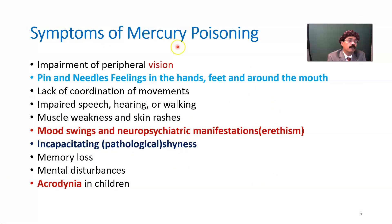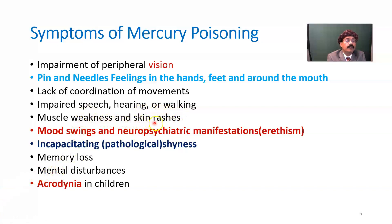The symptoms of mercury poisoning include impairment of peripheral vision, peripheral neuropathy, pain and needle-like feelings in the hands, feet, and around the mouth, lack of coordination of movement, impaired speech, hearing or walking, muscle weakness, and skin rashes. There are also mood swings and neuropsychiatric manifestations — we call it erethism — including incapacitating or pathological shyness, particularly with mercury exposure, memory loss, cognitive loss, dementia, mental retardation, and mental disturbance.